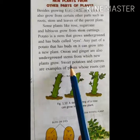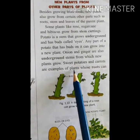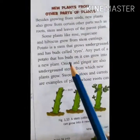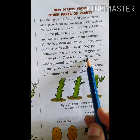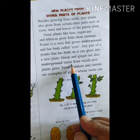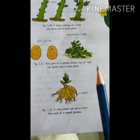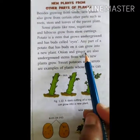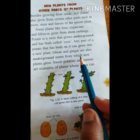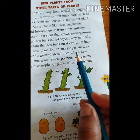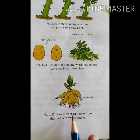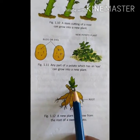Onion and ginger are also underground stems from which new plants can grow. Sweet potatoes and carrots are examples of plants whose roots can grow into new plants. Here you can see the sweet potato - onion and ginger also grow into new plants from their stems.